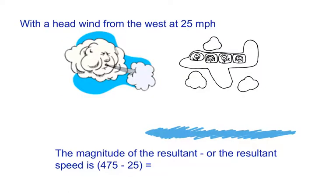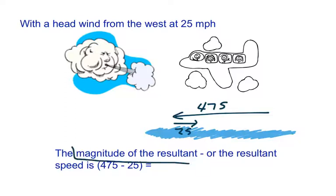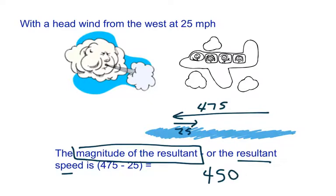We can look at that as a vector that's 475, and then we take back 25 of it. So the magnitude of the resultant vector — the resultant velocity — is going to be 475 minus 25, which is 450 miles per hour. With the wind, it slows the plane down a little bit, and that's our resultant velocity.